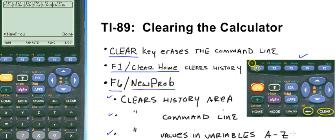Please remember that when you punch new problem, you're only clearing the variables from A to Z. So if you have the three-letter variable XYZ and you have a value in there, its value will remain. If you have a value stored in the Greek letter theta, let's say, that value will remain. New problem only clears out the variables from A through Z.